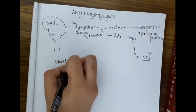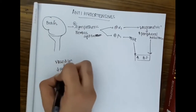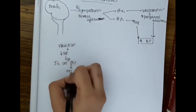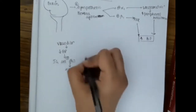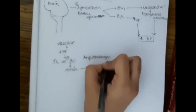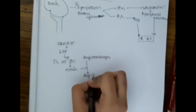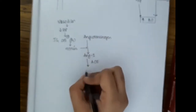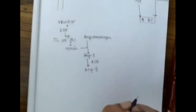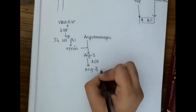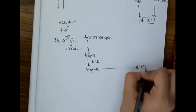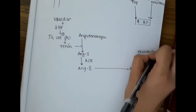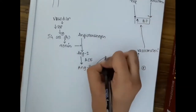Whenever there is vasodilation, this will decrease the BP and will activate the juxtaglomerular cells via beta-1, causing renin release. Renin converts angiotensinogen to angiotensin 1. Angiotensin 1, in the presence of angiotensin converting enzyme, forms angiotensin 2. This angiotensin 2 activates the AT1 receptor and causes vasoconstriction, which increases BP.